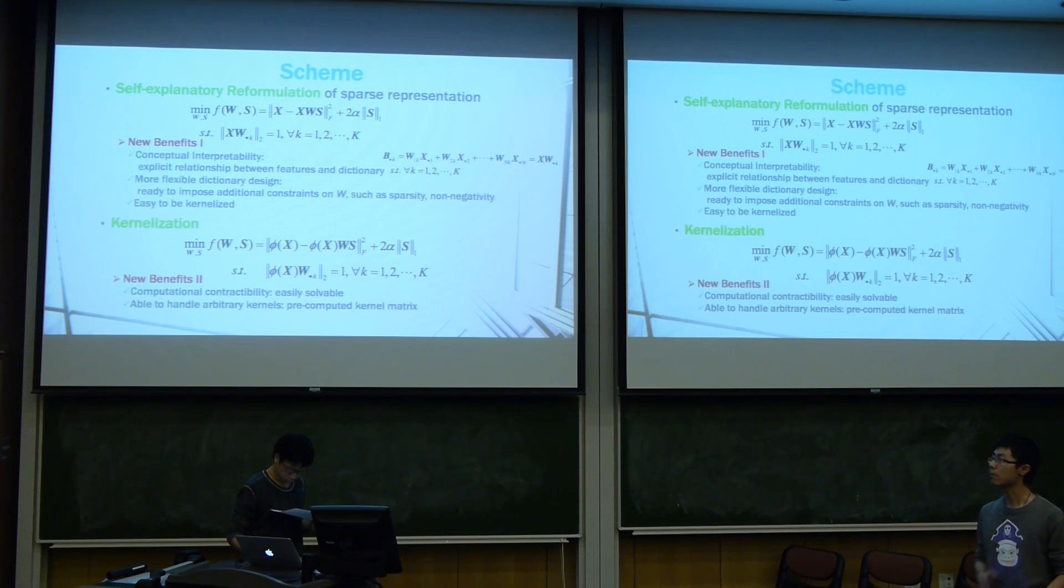Second, in some cases, it might be hard to impose meaningful constraints on original dictionary, but here is the easier case. We can introduce additional constraints on W such as sparsity and non-negativity. And third, more importantly, it is easier to be kernelized.